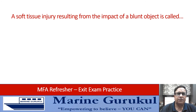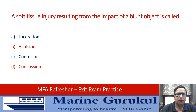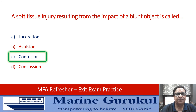A soft tissue injury resulting from a blood clot is called: laceration, avulsion, contusion, or concussion? The answer is C — contusion.